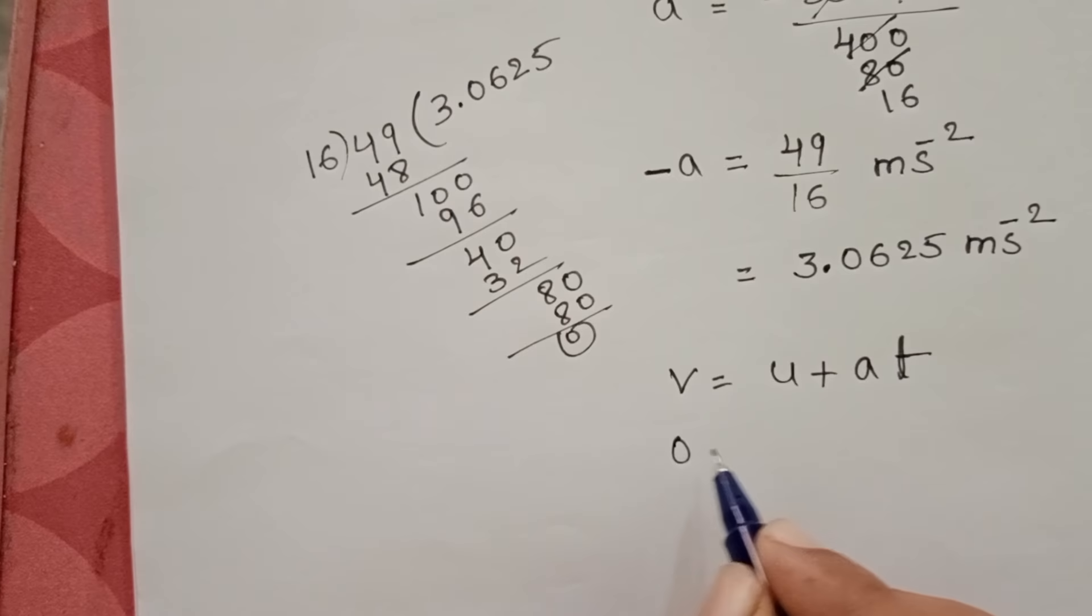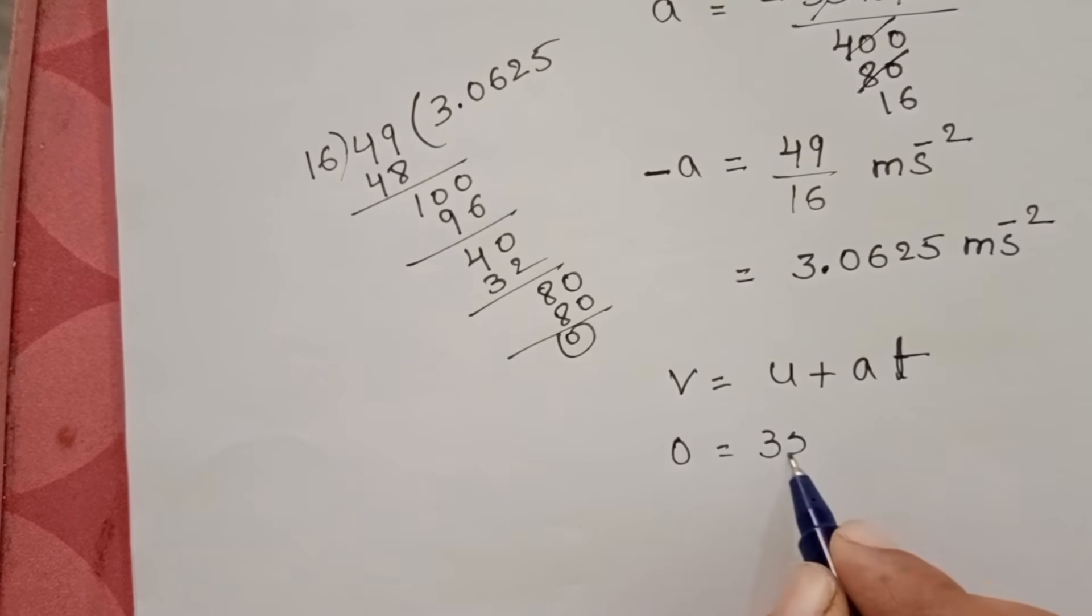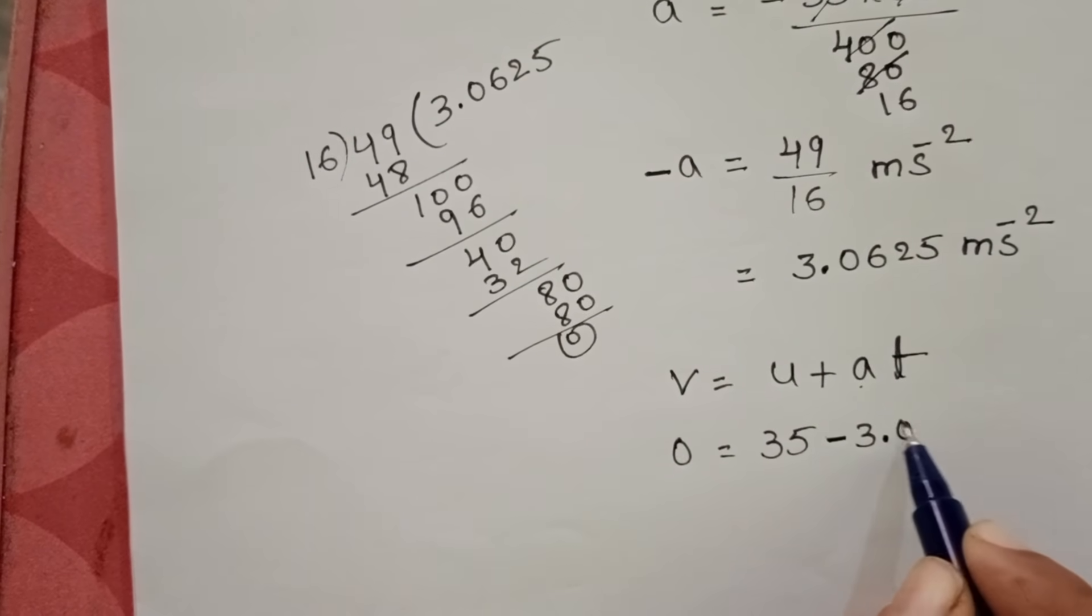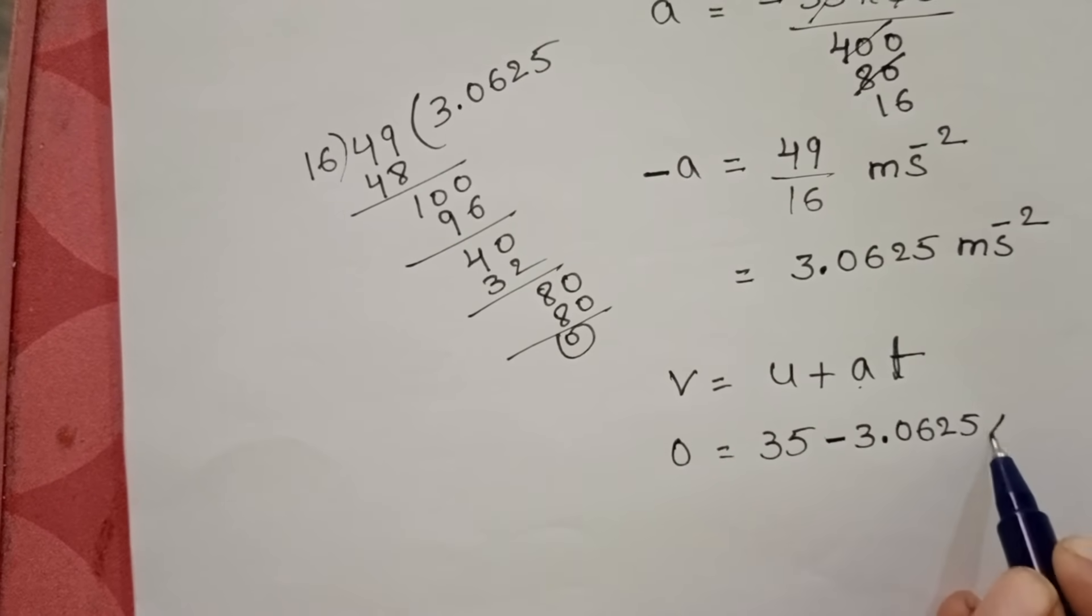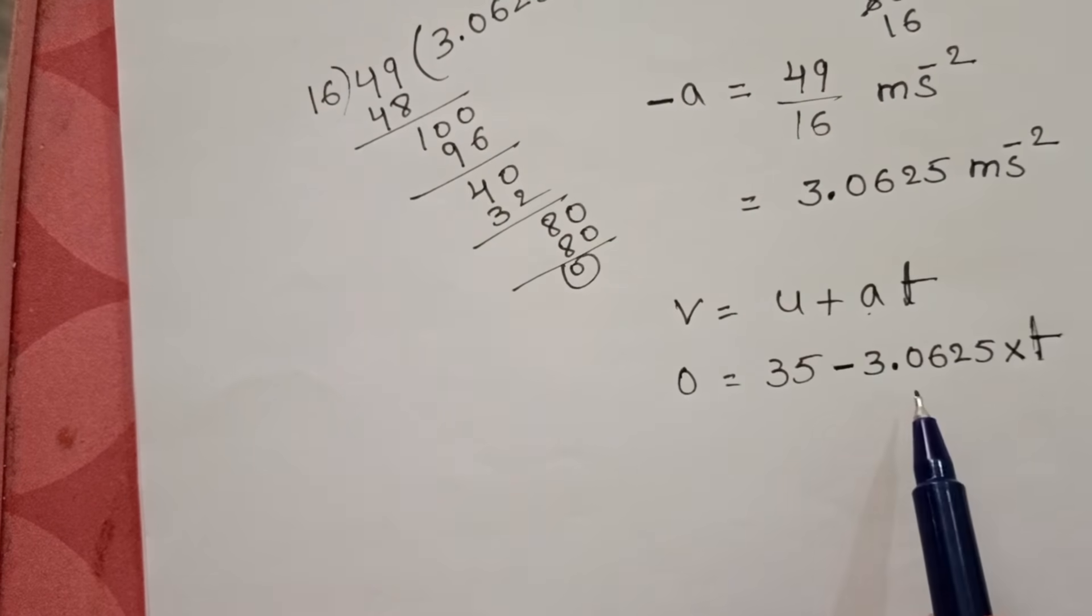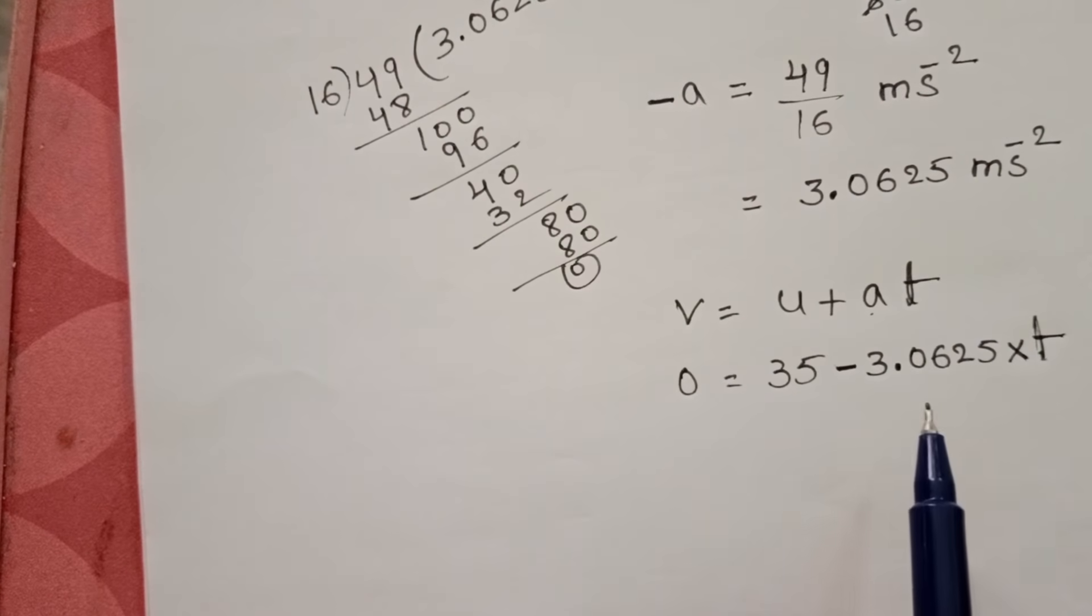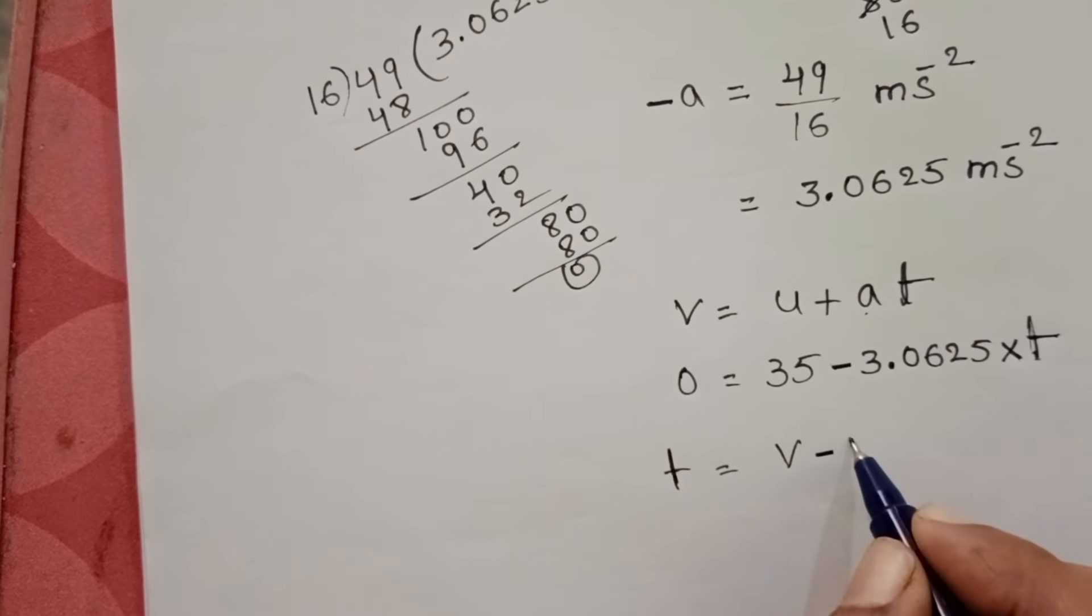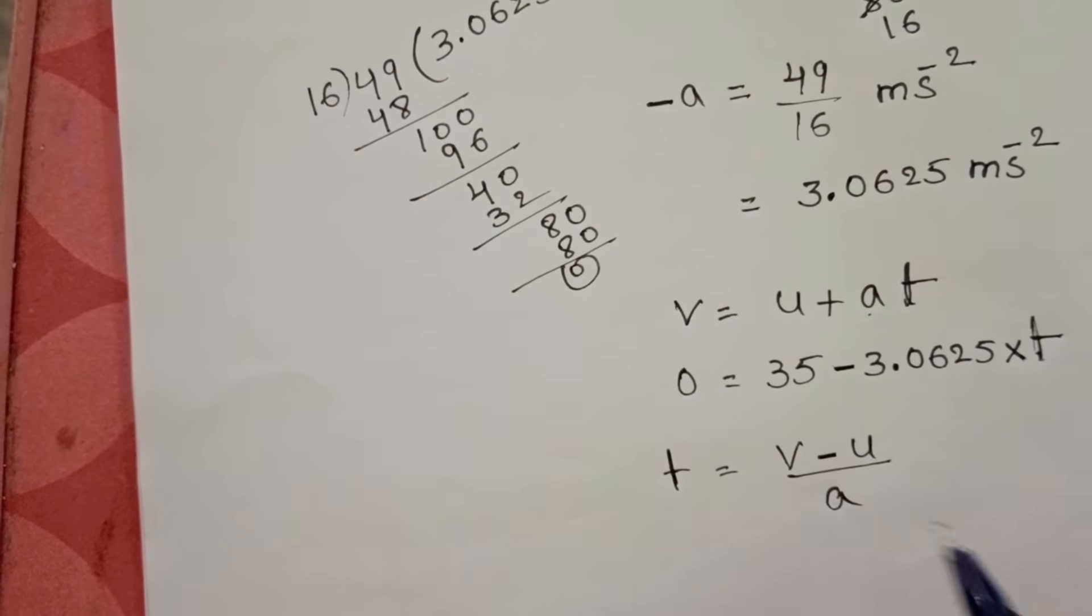V value 0, U value 35, and A equals minus 3.0625 times time. Otherwise, take in fraction form to get easy simplification. T equals V minus U by A.